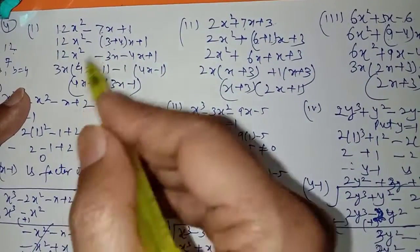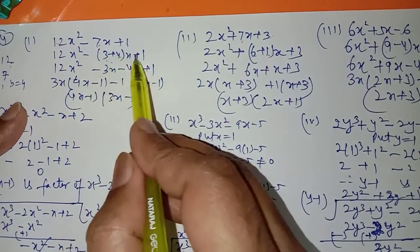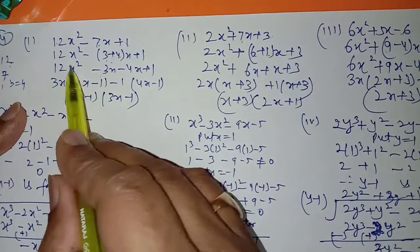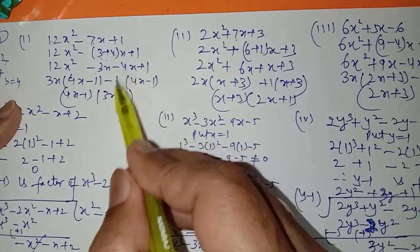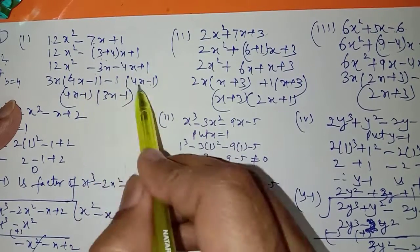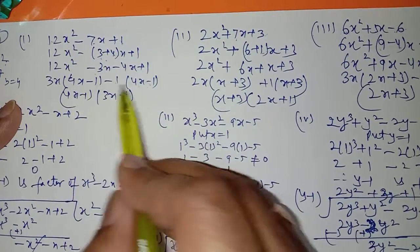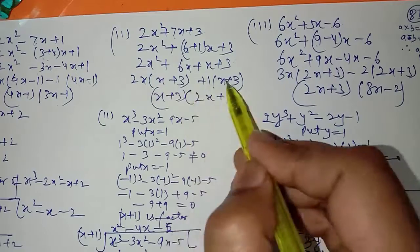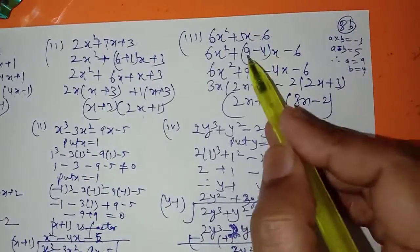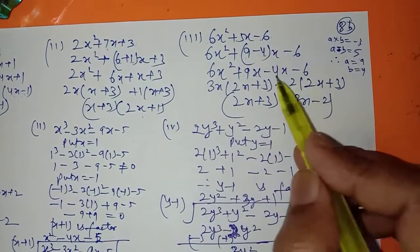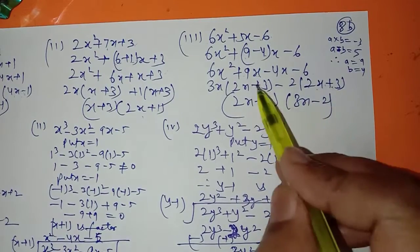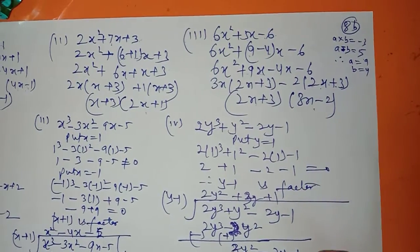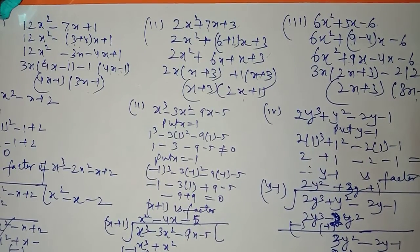So this is the method to factorize by splitting the middle term. You have done this in lower classes as well. We will discuss the remaining questions in the next lecture. Thank you.